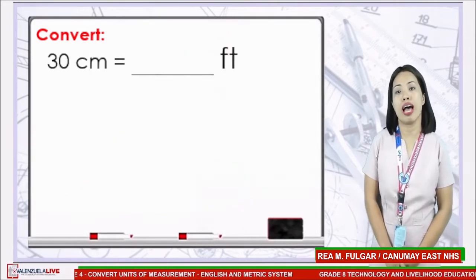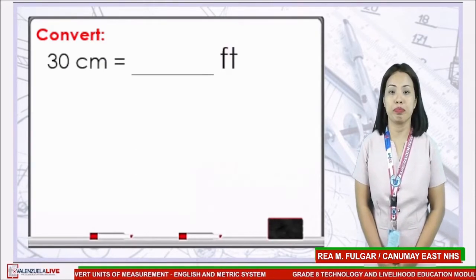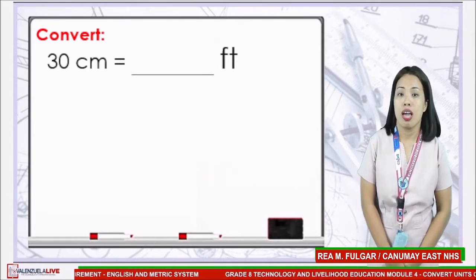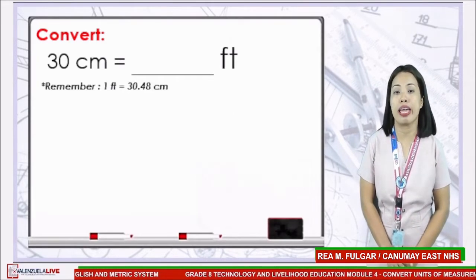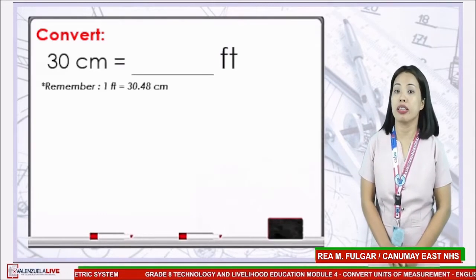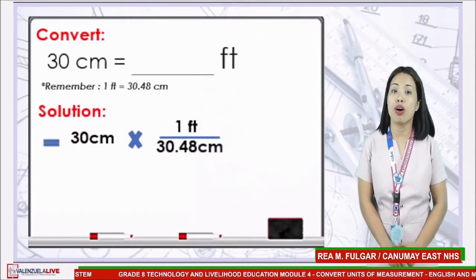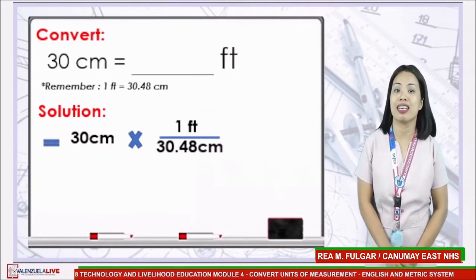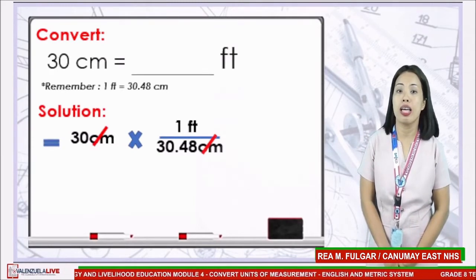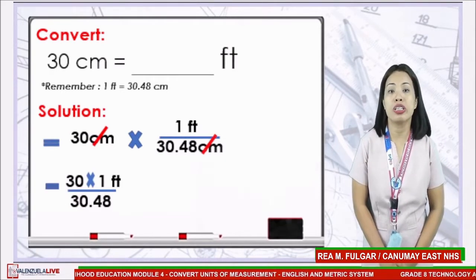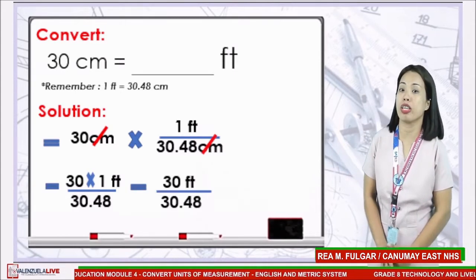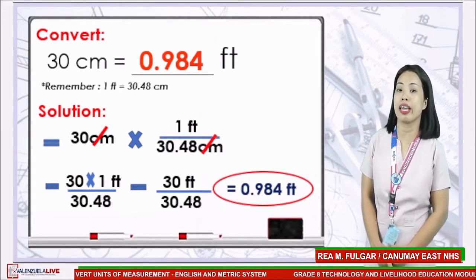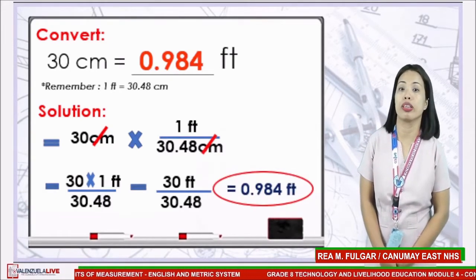Let's proceed to our last example: convert 30 cm to feet. In 1 foot, we have 30.48 cm. We have 30 cm multiplied by 1 foot over 30.48 cm. First, cancel the common unit, which is cm. Then multiply 30 by 1 foot, which gives us 30 over 30.48. Dividing the numbers will give us an answer of 0.984 foot.